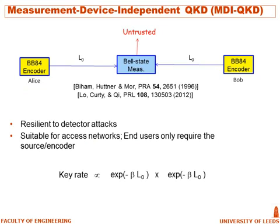Our candidate to demonstrate this improvement is the so-called measurement device independent QKD. MDI-QKD has been shown to be resilient to detector attacks and also suitable for future quantum-classical networks. In MDI-QKD, Alice and Bob send encoded photons to a middle station at which we perform a Bell state measurement, which is already like an entanglement swapping operation. In terms of key rate, however, both photons must survive the path loss, which implies that the key rate scales with the loss in the entire channel.